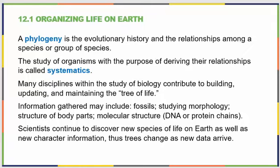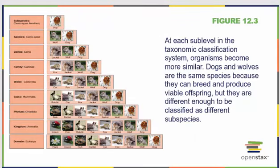Information given to those working in systematics includes fossils, different studies on morphology — what you look like — or anatomy, which is the structure of your body parts, and even your molecular information, your DNA or your protein chains. We're continuously finding new species on Earth, and actually new information about older species when we find new ways to study things. Taxonomy is the scientific process of naming and grouping species.